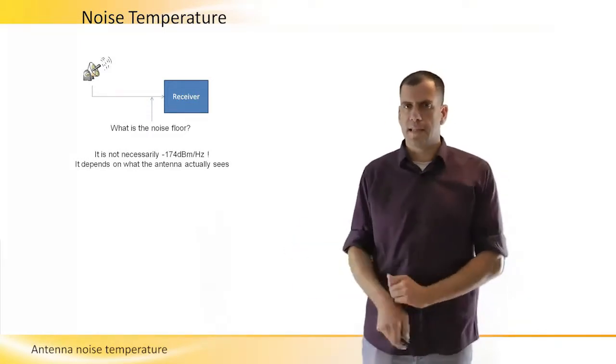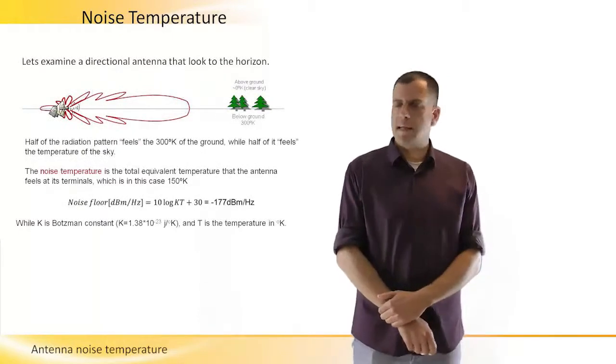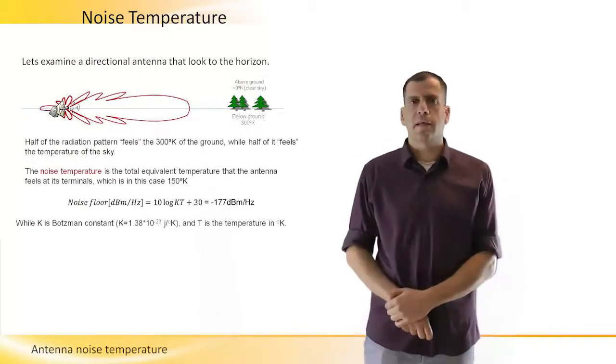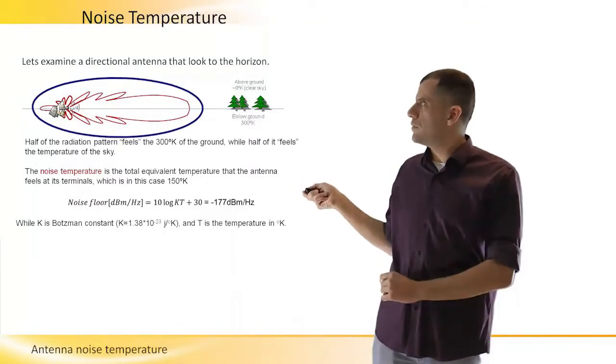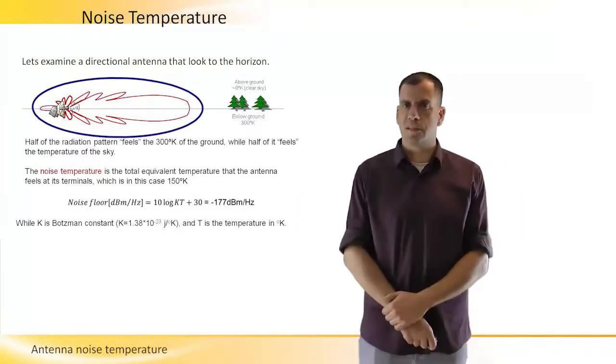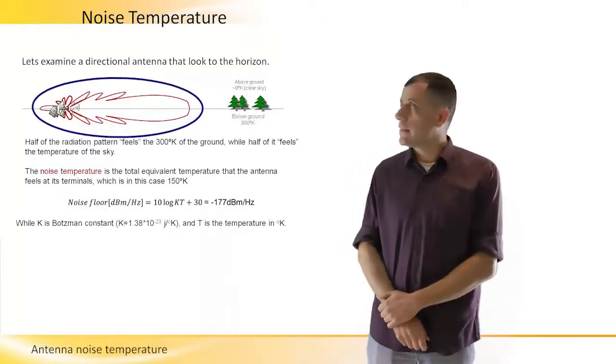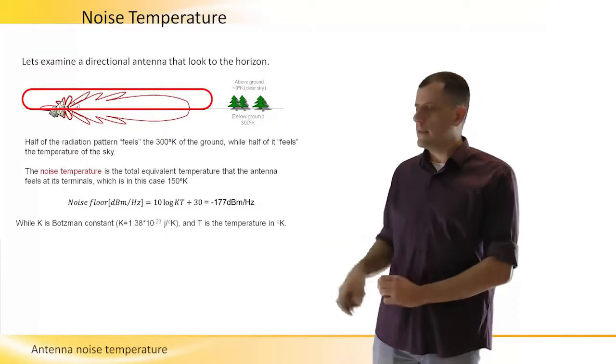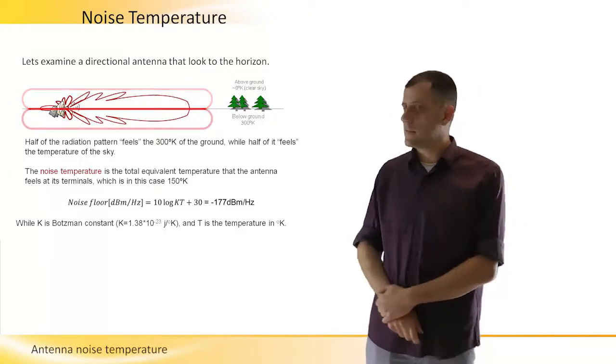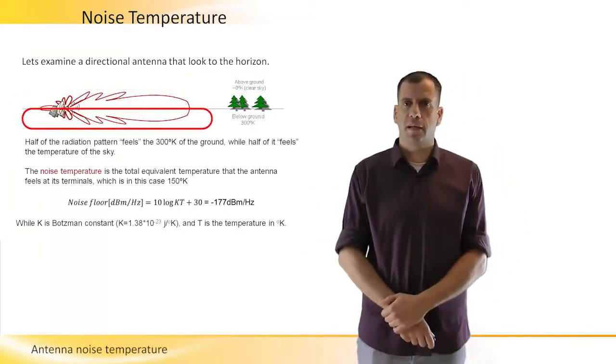If we look at the next slide, let's examine the following example. If we look at the radiation pattern of an antenna that looks towards the horizon, we can see that half of it is above ground level, while the other half sees the ground level.